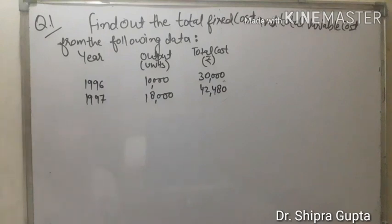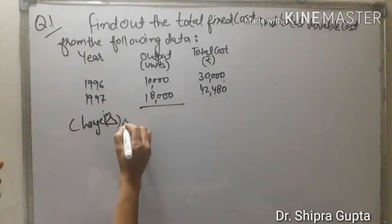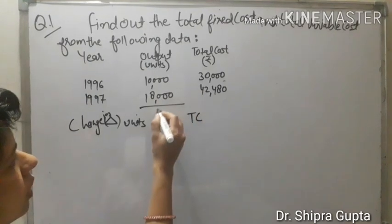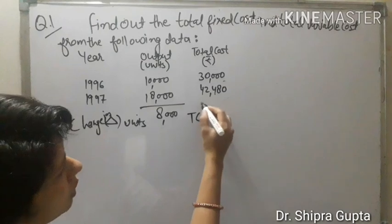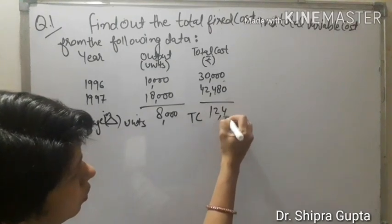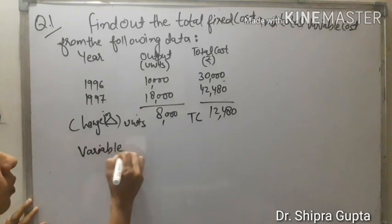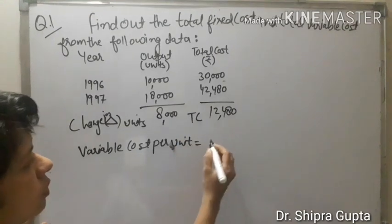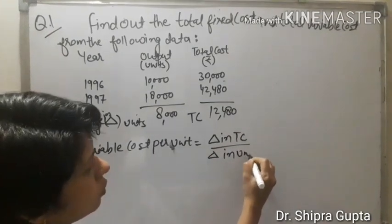First, we will calculate variable cost. We will do change in units and change in total cost. Change in units means 18,000 minus 10,000, which is 8,000. Change in total cost is 42,480 minus 30,000, which is 12,480. The formula is variable cost per unit equals change in total cost upon change in units.